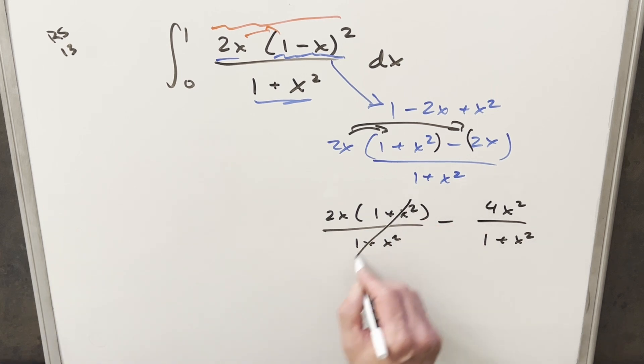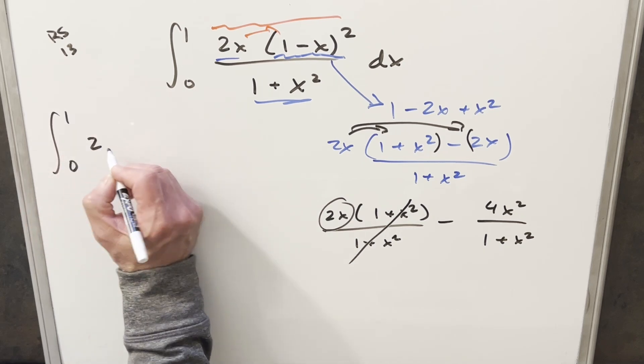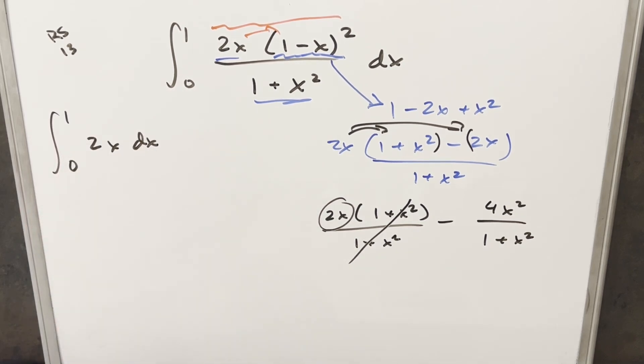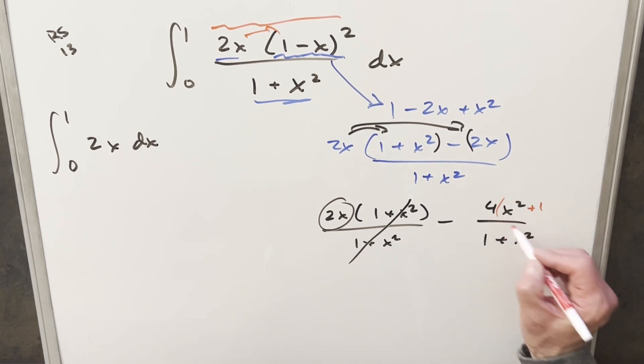So then here, this is going to cancel, and then when we rewrite this, we can split this up. The first one's just going to be 2x. Let's write that part down. This is just going to be power rule 2x dx. And then here, before I put this back in the integral, let's try to simplify this more. If I add a plus 1 here, we'll put this in parentheses.